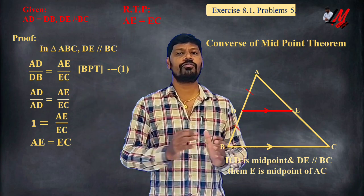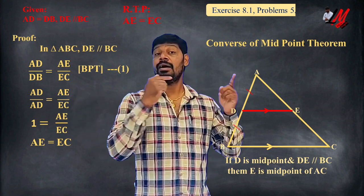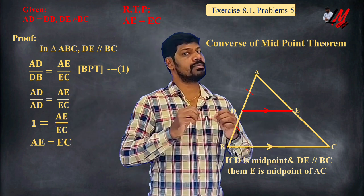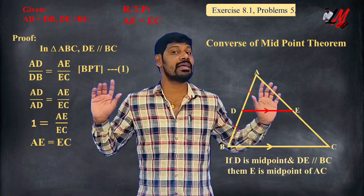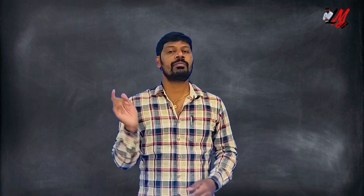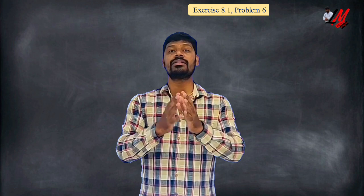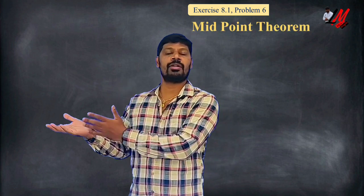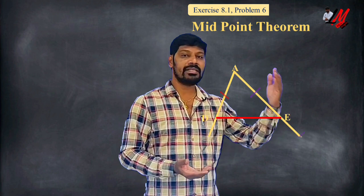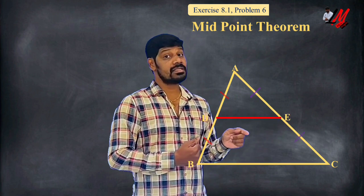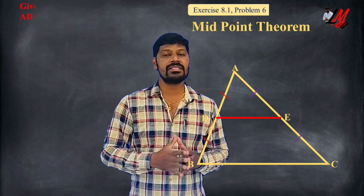This is a simple proof covering the entire exercise. We use the Basic Proportionality Theorem to prove the midpoint theorem. Coming back to the sixth question: in triangle ABC, D is the midpoint of AB, so AD equals DB — this is the given information.